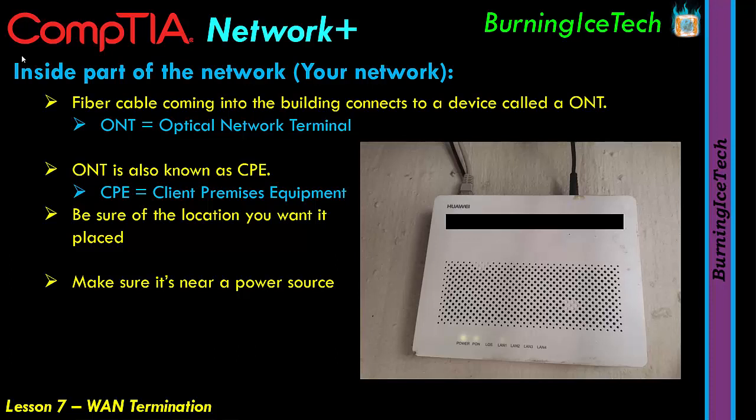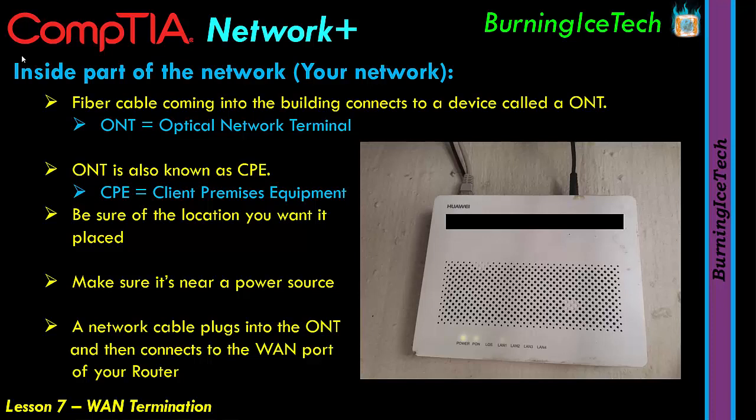One cable will be the fiber line coming in from the outside — from that termination box, into your house or office, connecting to the ONT. The third cable will normally go from the ONT into your router. In most cases that'll be a standard network cable with RJ45 connectors, but in other cases it can also be a short fiber cable connecting to your router. Most commonly though, you'll plug a network cable into the RJ45 jack on the ONT, and from there it goes into the WAN port of your router.